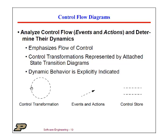Here is a control transformation. It's represented by a dotted line and a circle. Remember, the data transformation was a solid circle — this is how we represent a control transformation. Generally, this then has some sort of timing specification — what's going to happen when. That's a perfect example for a state transition diagram. These control transformations are defined by an attached STD.